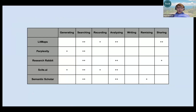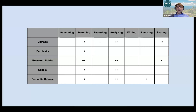Here again is a chart of tools focused on searching but usable during other phases — things like Perplexity, ResearchRabbit, Semantic Scholar, and LitMaps, all focused on helping researchers find resources and information. They can also be used to analyze connections between research or discover similar authors.